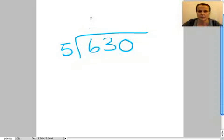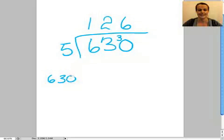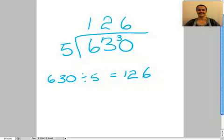5 goes into 6 once. But there's one left over. So we're going to shove that one there. And then we're going to pretend that that says 30. It doesn't, sorry 13. It says really truly 130. We're going to pretend it's 13. 5 into 13 goes twice. Remainder 3. And 5 goes into 30, 6 times. Look at that. Isn't that good? 630 divided by 5 equals 126. Get in.